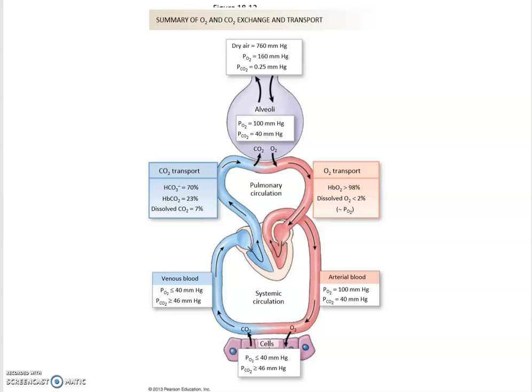Let's take a look at first at oxygen. Remember that at the level of the alveoli we have a partial pressure of oxygen of 100 millimeters of mercury, and in the tissues we're going down to 40 millimeters of mercury. We're going back and forth between 100 and 40 millimeters of mercury.